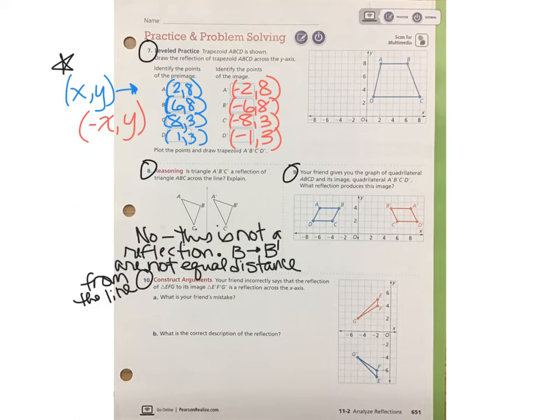Number 8. These two triangles are not reflections of each other across the line that is given. If you look at the distance between B and B prime, it is not an equal distance from that line. So therefore, this is not a reflection. This is another kind of transformation called a slide.